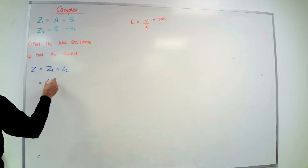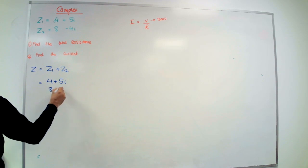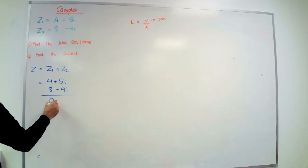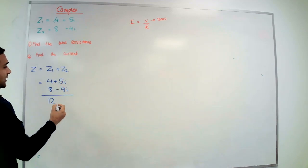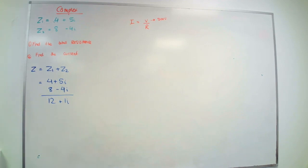What is that? 4 plus 5i, 8 minus 4i. If I add them, 8 plus 4 is 12, 5i minus 4i is 1i. I can write plus 1i, I can just write i, same thing. So this is my Z and this is the total resistance.